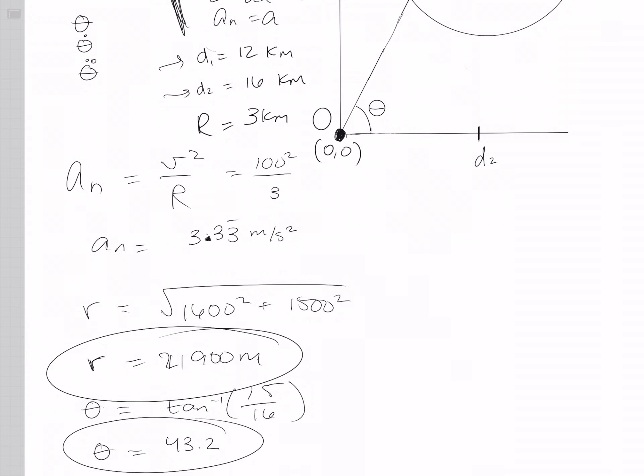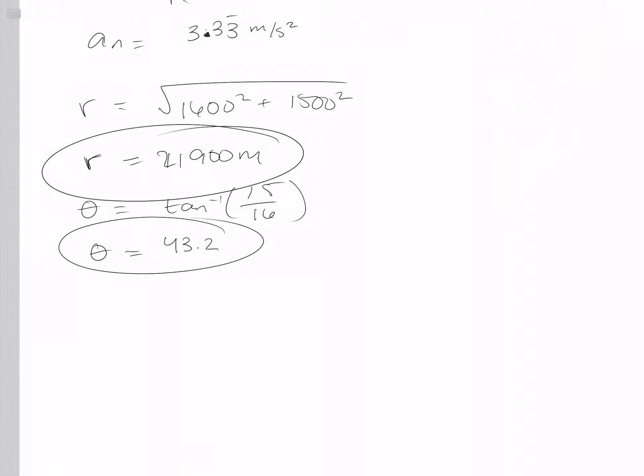The difficult part now comes when we're looking for r dot, theta dot, and r double dot and theta double dot, because you've done this a million times before.